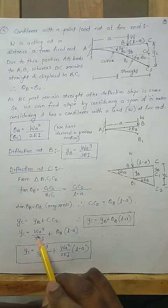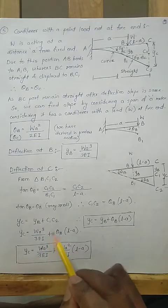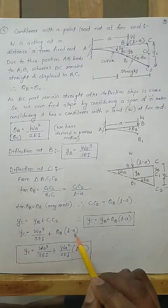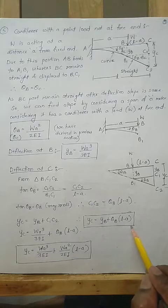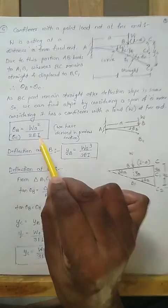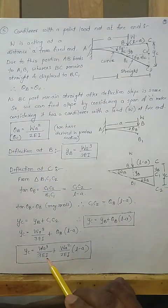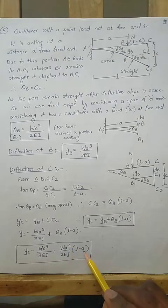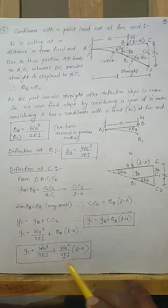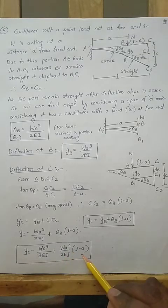Total y_c equals y_b plus CC1. So y_c equals W·a³ / (3EI) plus theta_b·(L minus a). Substituting the known values, y_c equals W·a³ / (3EI) plus W·a² / (2EI) multiplied by (L minus a). The first term is deflection due to the loaded part AB, and the second term is the additional deflection at point C due to theta times the remaining span (L minus a).